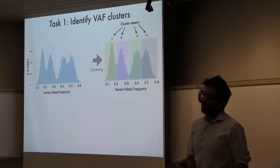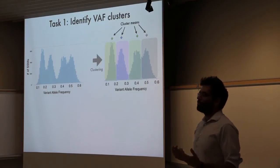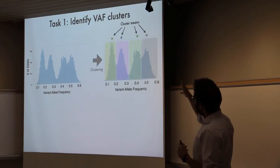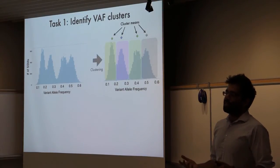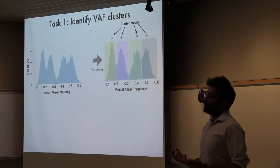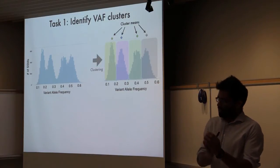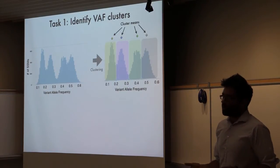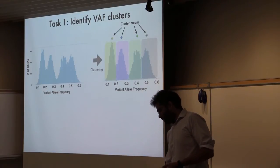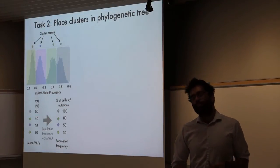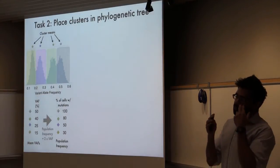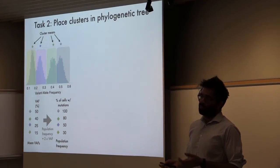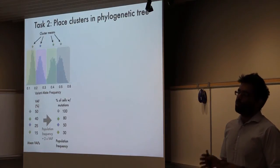Some algorithms stop here, but to us that doesn't really go far enough, because it doesn't actually tell you what genotypes are present. You've identified there are clusters A and B in the sample, but that doesn't tell you if the tumor sample has cells containing mutations A and B together in the same cell, or some cells that contain just A and some that contain just B. To do that, you have to place these VAF clusters in a phylogenetic tree. In order to do that, you need to convert variant allele frequency to the proportion of cells that contain that mutation.